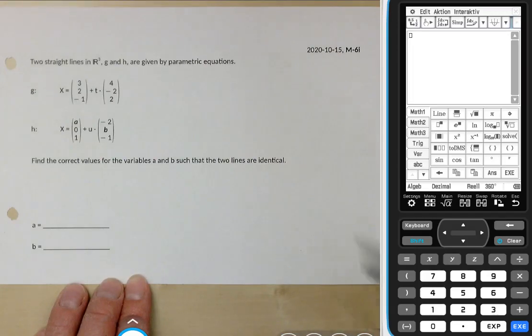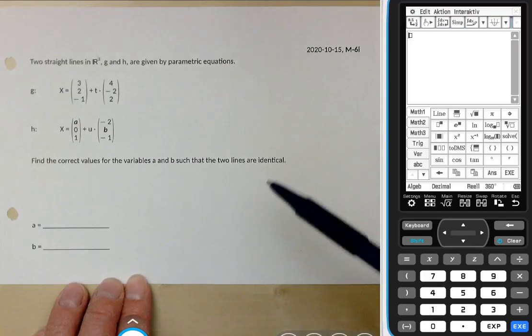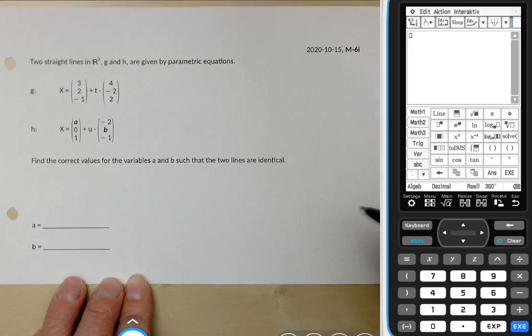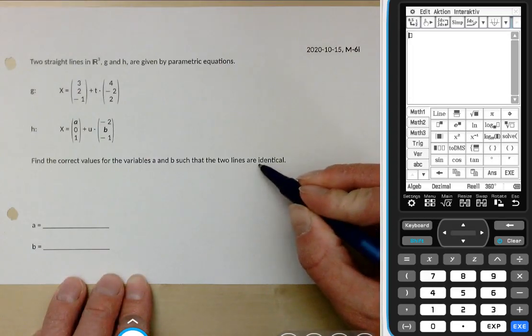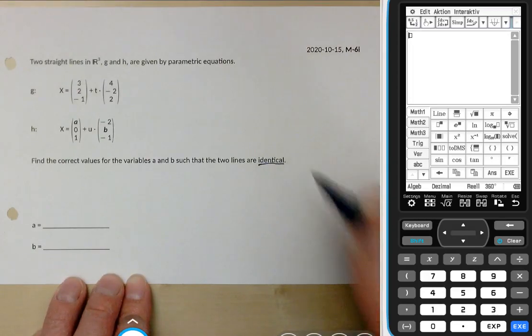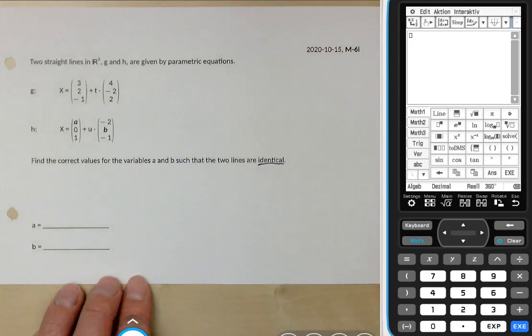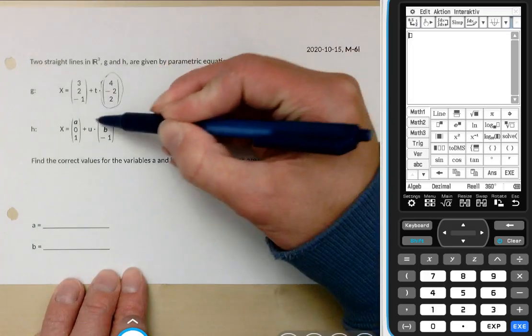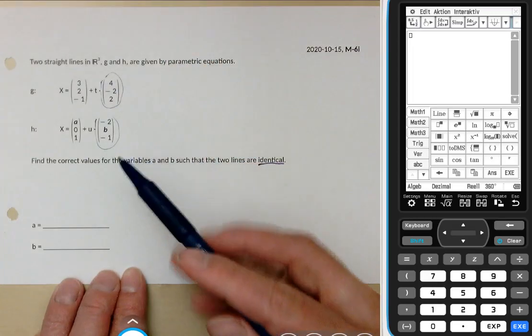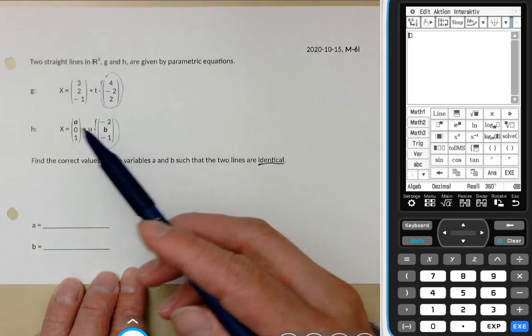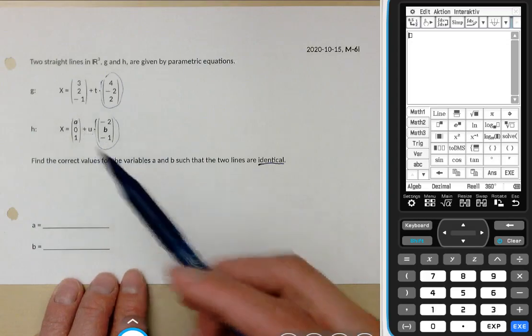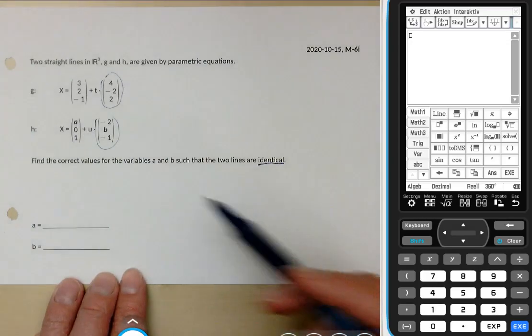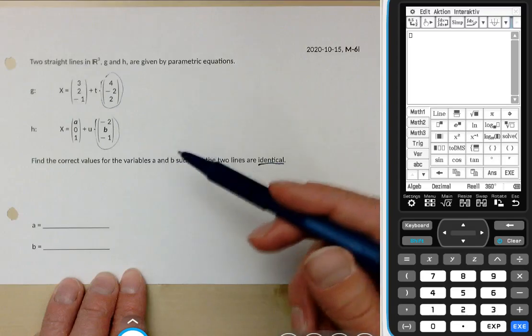I'm doing this one without a calculator and afterwards I show you the other one with the calculator so that you can see both ways. In both cases to find out that they are identical you have to check two things. First, the direction vectors have to be multiples of each other and the initial point of one of the lines has to be on the other line. So let's go for the direction vectors first because that's the easier part.